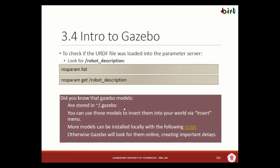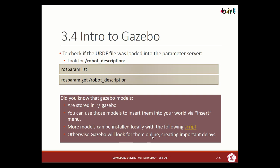More models can be inserted with a download script. Some of you may not have downloaded many models yet. If you click the link, it takes you to a .sh file you can download and run — it automatically saves all models into the Gazebo folder. If you don't have these folders, Gazebo tries to look for models online from the default website and download them on demand, but this may take a long time. Download them first so you can load Gazebo quickly.